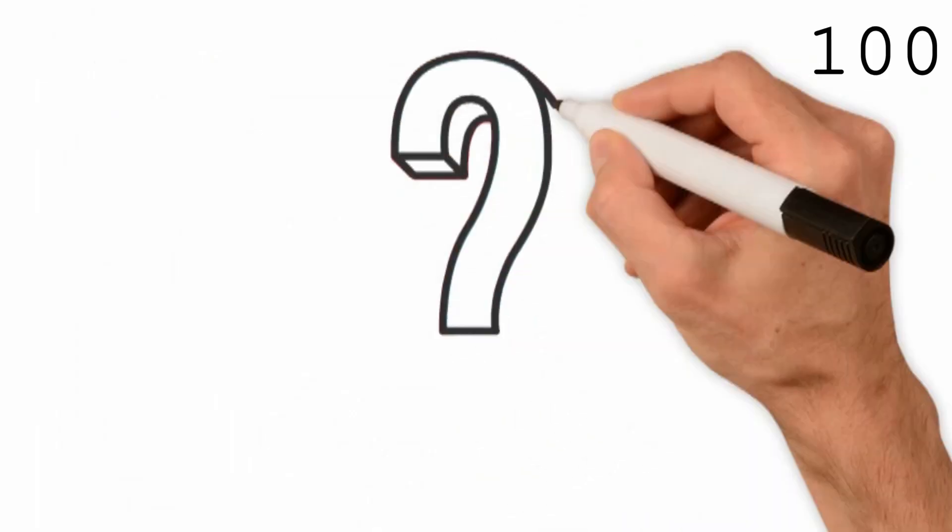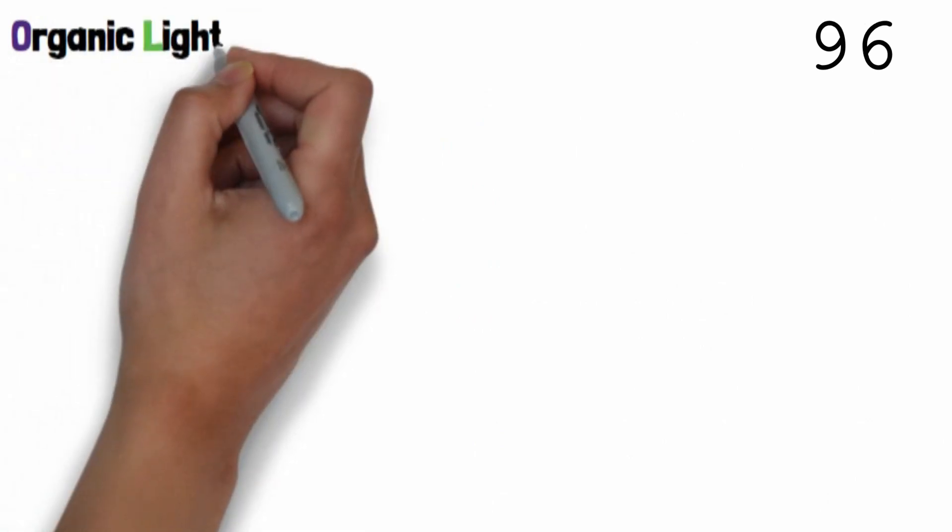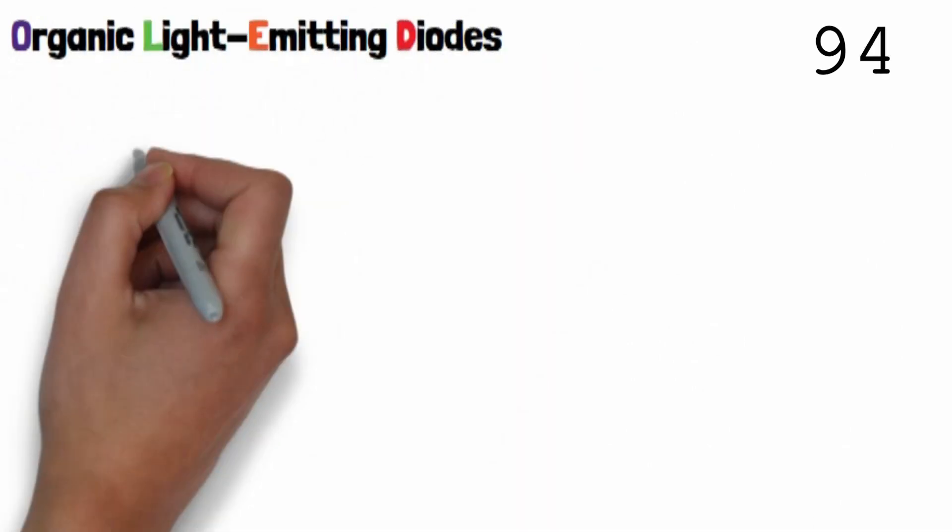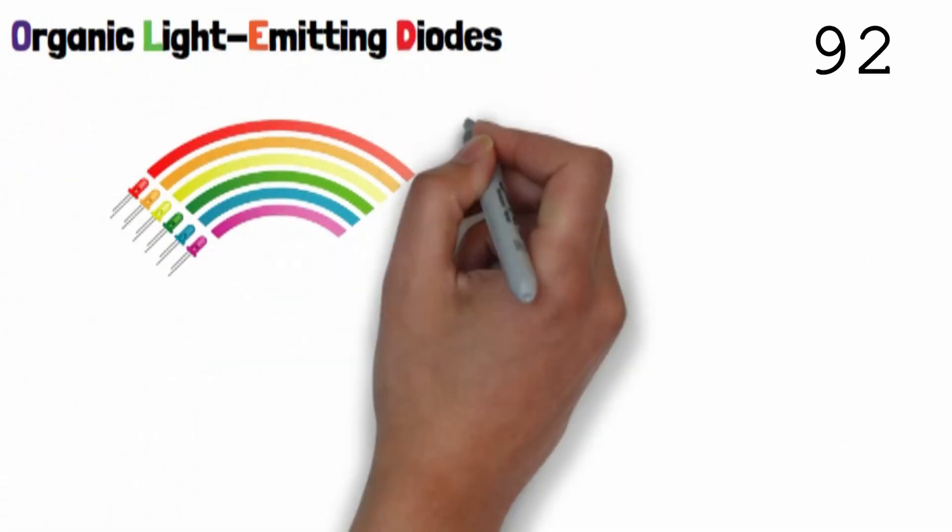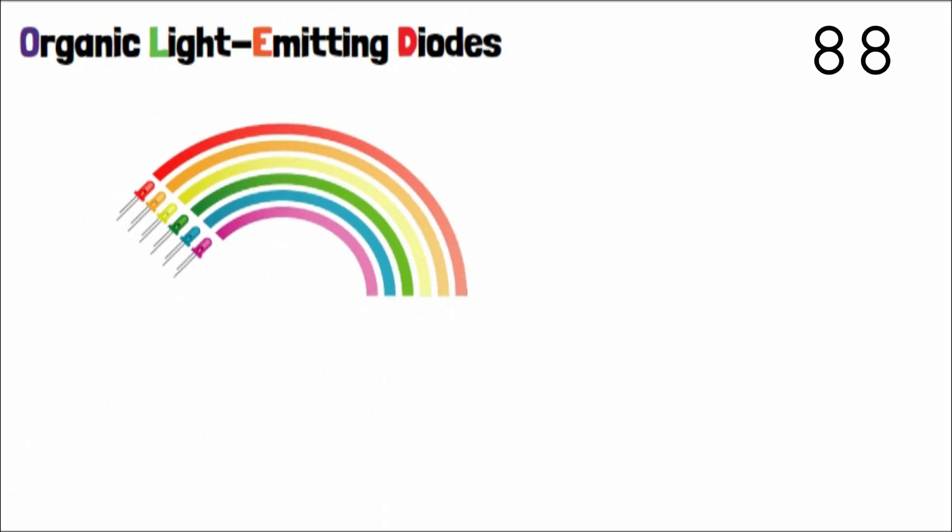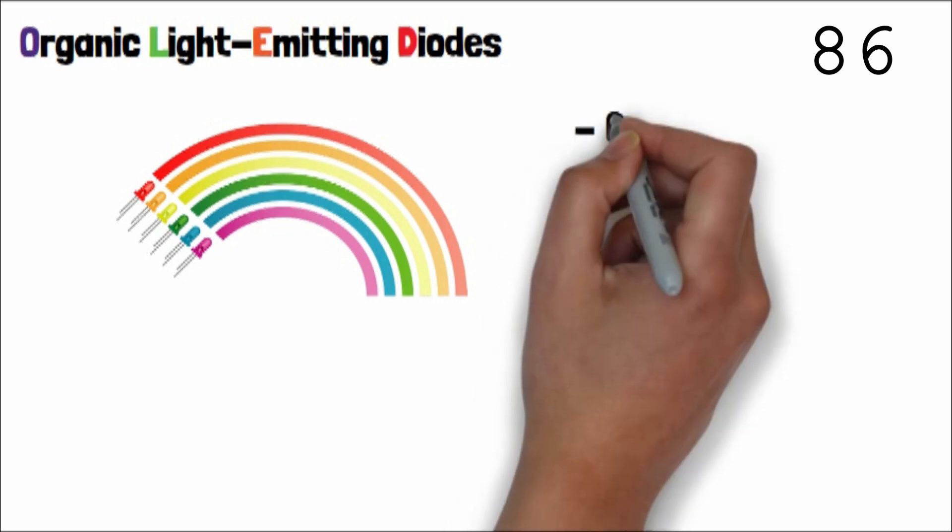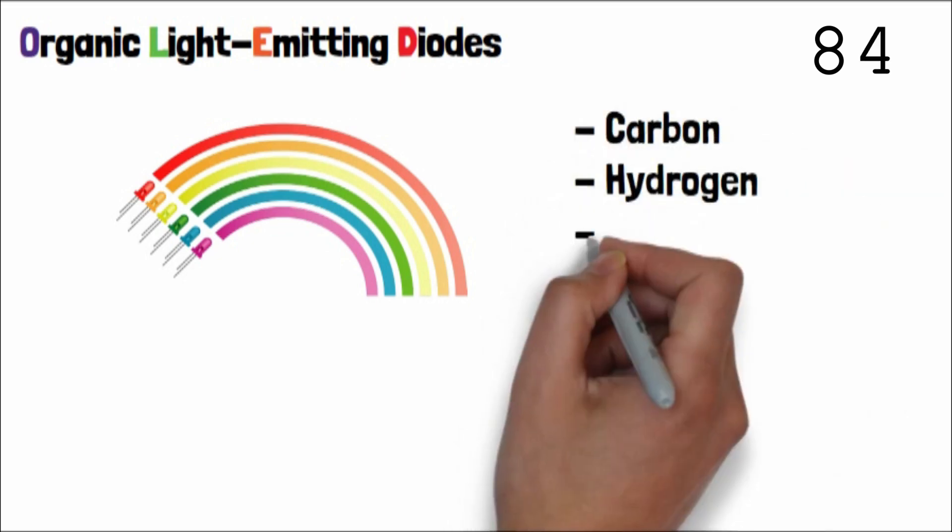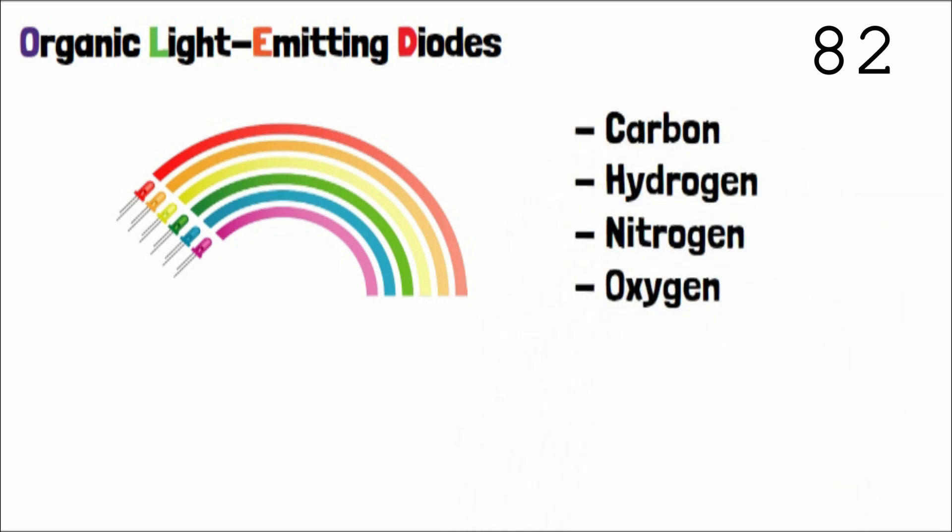We often hear about OLEDs, but what are OLEDs? OLED means organic light emitting diodes. They are small diodes which emit light. Their emissive layer is made of organic molecules, namely molecules with carbon and hydrogen, but also nitrogen and oxygen.